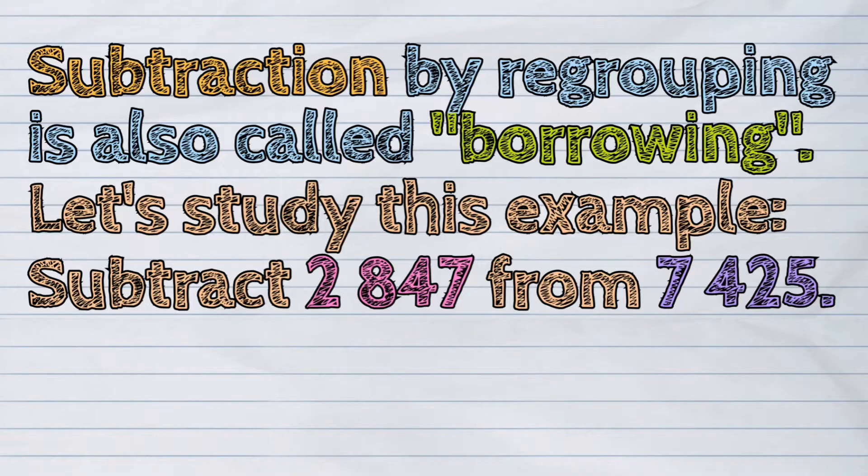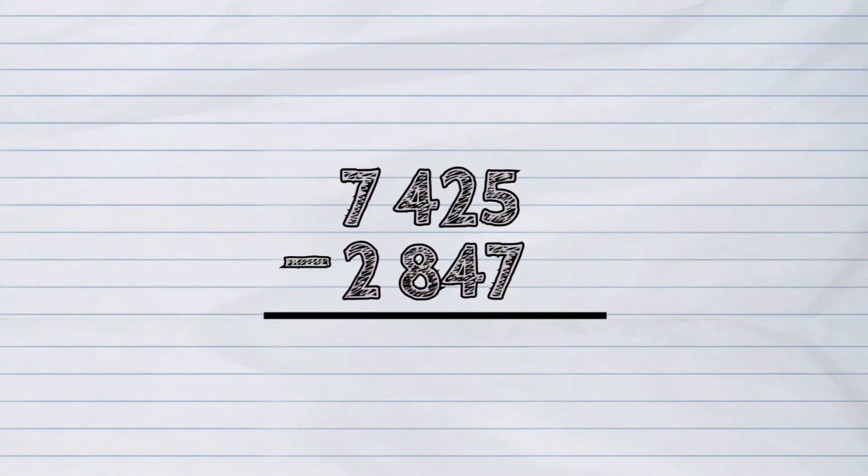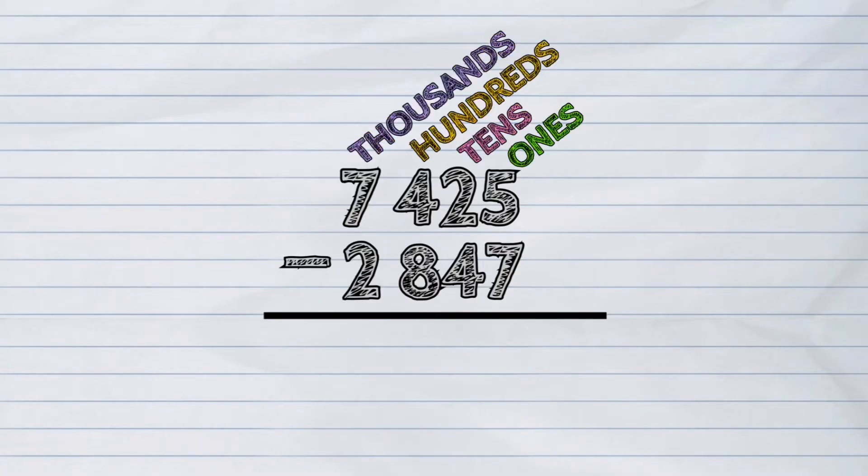To subtract numbers with more than one digit, we have to write down the bigger number first and the smaller number directly below it. Make sure to arrange them in columns according to their place value.